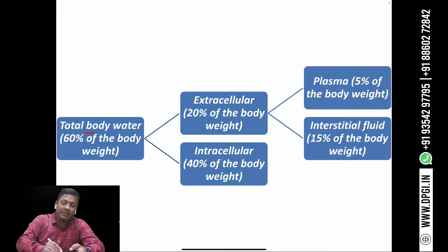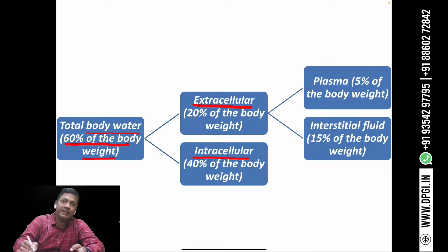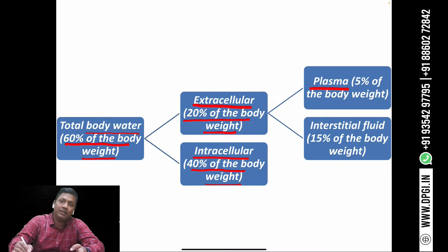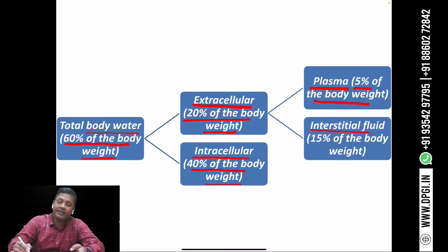To summarize: total body water is 60% of the body weight, divided into two compartments. Extracellular fluid is 20% of the body weight and intracellular fluid is 40% of the body weight. The ECF is further divided into plasma at 5% and interstitial fluid at 15% of the body weight.